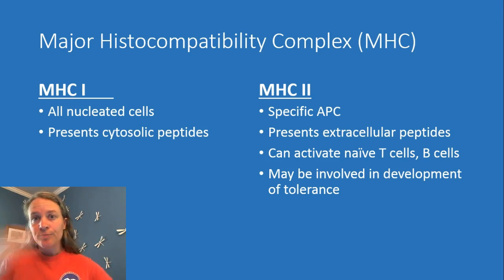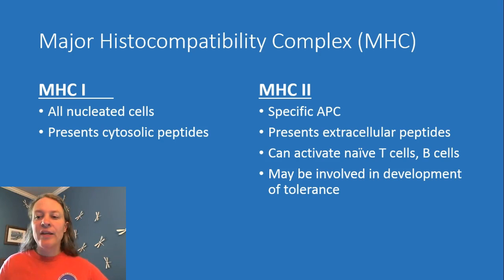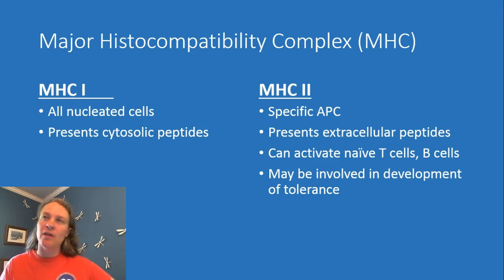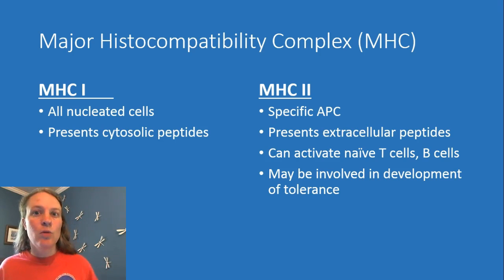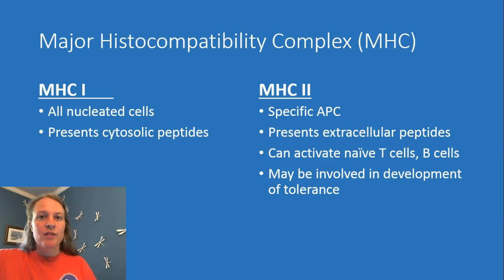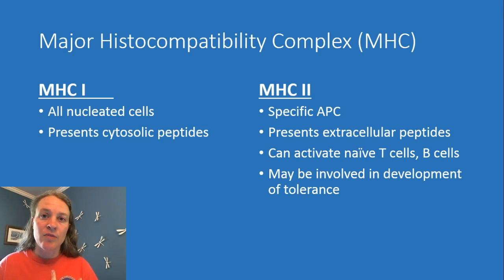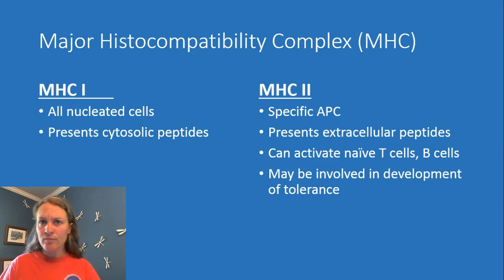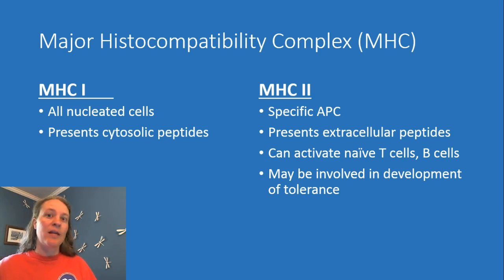MHC2 is the specific molecule involved in antigen presentation in the case of antigen-presenting cells. This allows the cells to present extracellular peptides. Essentially the cells will phagocytose a problem substance, digest it, and then present a small piece of it called an epitope via this MHC2 molecule. Once that happens, adaptive immune cells can detect it and mount an adaptive response — calling in specific T cells and B cells to create antibodies to deal with the problem.